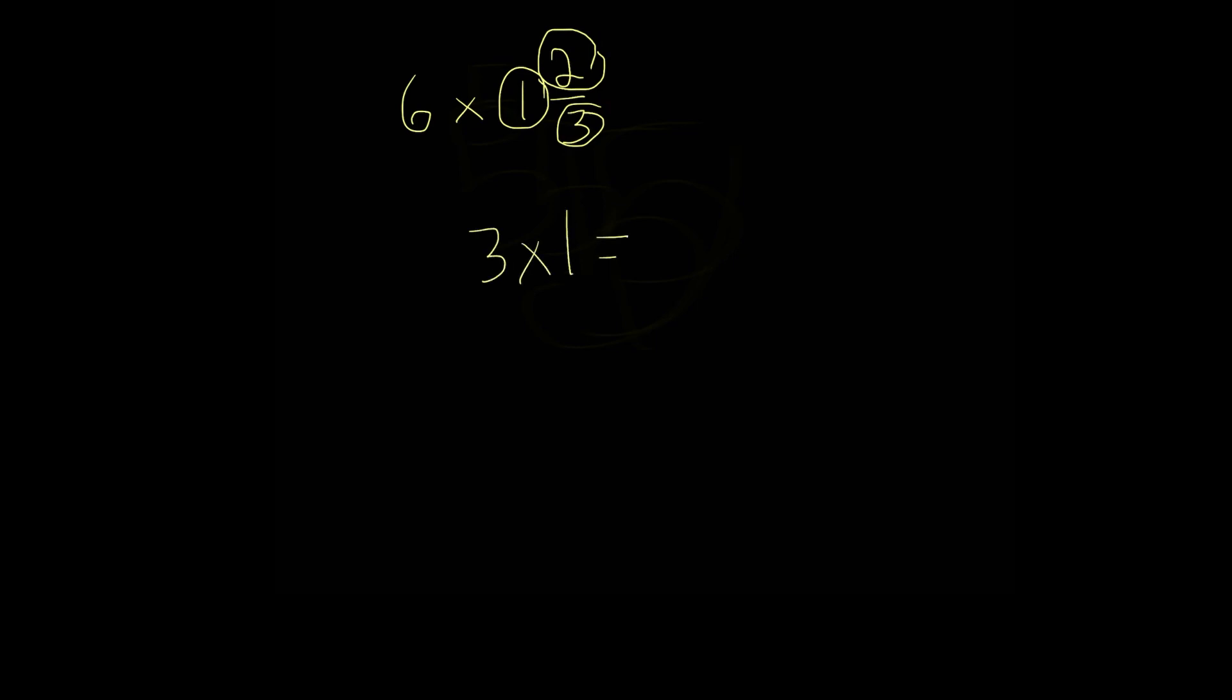So we do 3 times 1, this is 3, and then we add the 2 here, and this equals 5, and 5 is our numerator of our improper fraction.